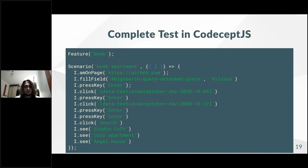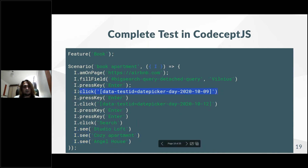Sometimes the test fails because not always do these apartments appear in the first results. I would also improve our test by changing the date because it won't work in the nearest future. I'll pick up some JavaScript libraries to transform time. But still, it's an absolutely valid test you can work with.